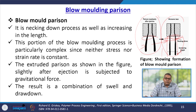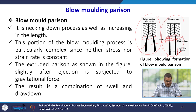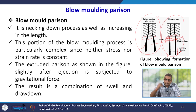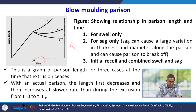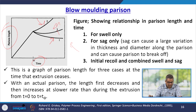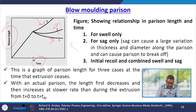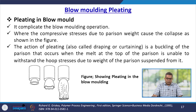The extruded parison, slightly after ejection, is subjected to gravitational force causing the diameter to decrease. The result is a combination of swell and drawdown. A graph shows parison length versus time for three cases: swell only, sag only, and initial recoil combined with swell. With an actual parison, the length first decreases then increases at a slower rate during extrusion from time t=0 to t-theta.